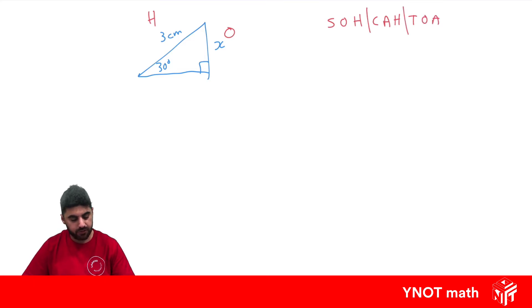We can see hopefully that sine is the one that uses opposite and hypotenuse. So we need to use the sine function. Remember it's sine of the angle we're referencing equals the opposite side divided by the hypotenuse. So let's put in everything we know. So the angle we're referencing is 30 degrees. The opposite side is x and the hypotenuse is 3.